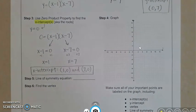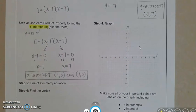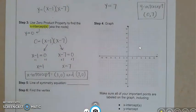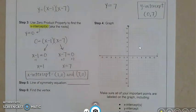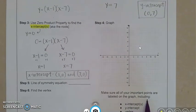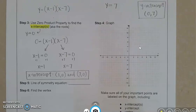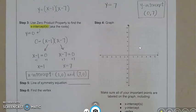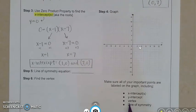Now step number four is to graph. And as of right now we just have three things to graph. We have three points that we can graph. You can see down here it does say make sure all of your important points are labeled on the graph including, there's actually four things that they want us. They want our x-intercepts, our y-intercepts, the vertex, and the line of symmetry.